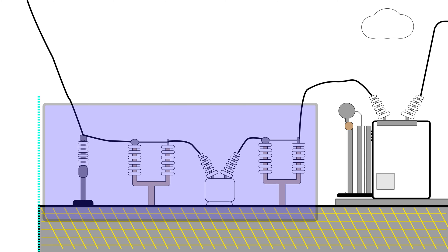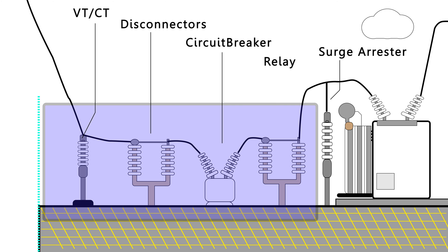And we can group together the VT and CT, the disconnectors, and the circuit breaker and call these the protection system of the substation. They perform a really important job in the substation because they actually protect the grid from faults and automatically respond if there is a fault. So let's group these together and call them the protection system.